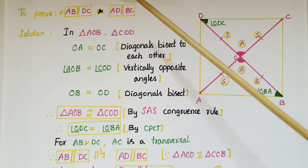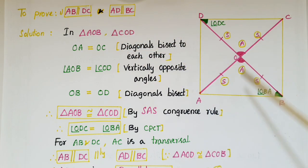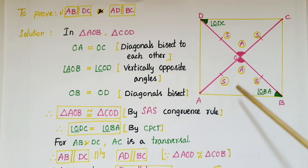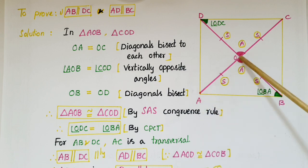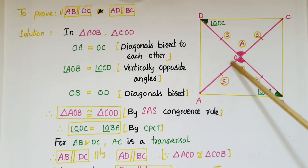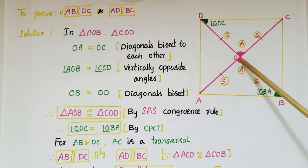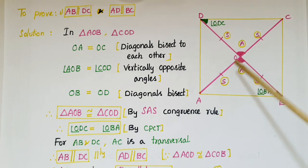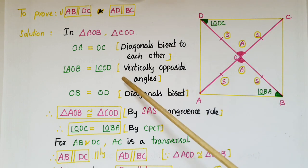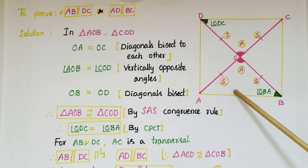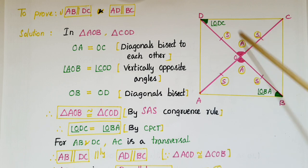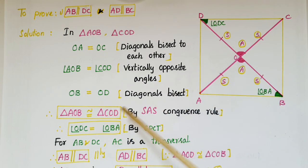First, we prove AB is parallel to DC and AD is parallel to BC. These sides belong to triangles AOB and COD. In triangle AOB and triangle COD: OA equals OC because diagonals bisect each other, angle AOB equals angle COD because they are vertically opposite angles, and OB equals OD because diagonals bisect each other.